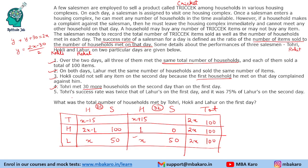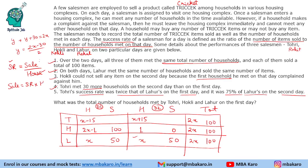The last piece of information talks about success rate. Tohuri's success rate was twice that of Lahur on the first day, and 75% of Lahur's on the second day. The success rate is sale divided by households met. Lahur sells 50 items and meets X households, so his success rate is 50 upon X on both days. Tohuri's Day 1 success rate is twice that, which is 100 upon X.